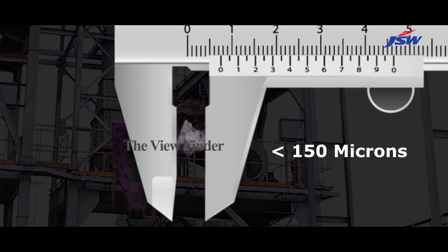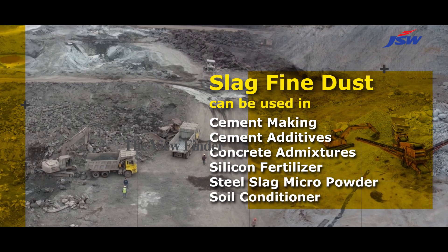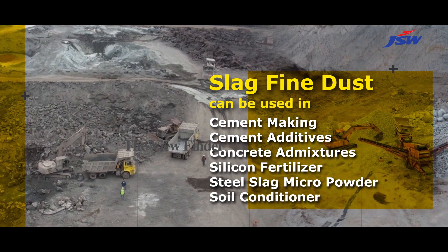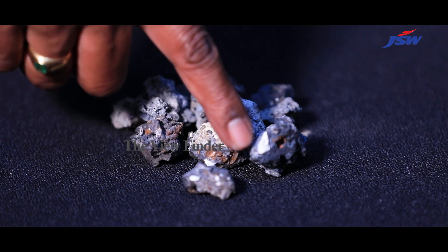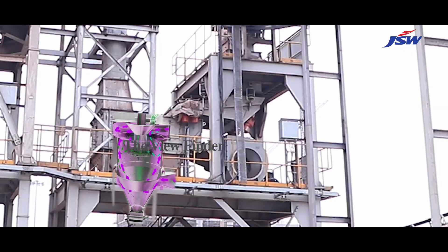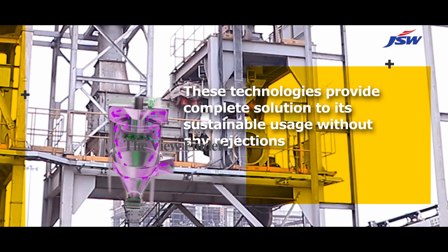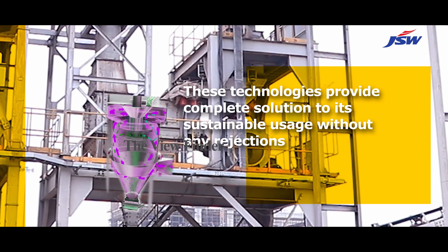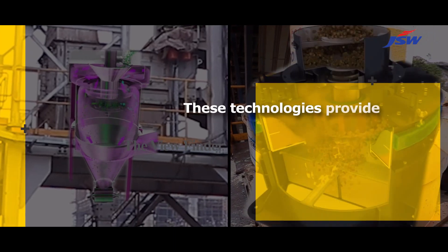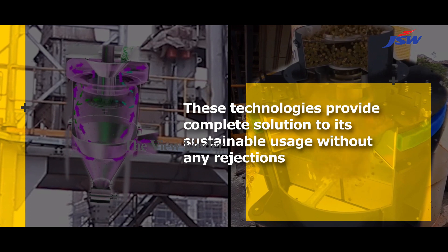The product is further subjected to an air classifier for separation of ultrafine fractions of less than 150 microns. This classifier product can be used in cement making, in concrete mixtures, as silicon fertilizer, as steel slag micro powder, and as soil conditioner. The developed process breaks and exposes the free lime particles in the steel slag and removes them via the classifier, which reduces its expansive behavior. This technology addresses the inherent issues of steel slag — such as presence of fine metal particles, wide size distribution, and presence of expansive free lime — which made it unusable until now.